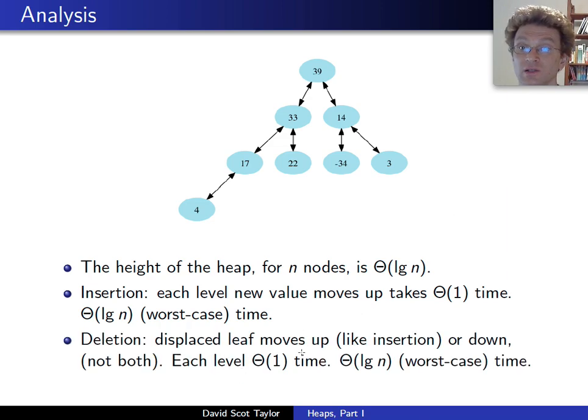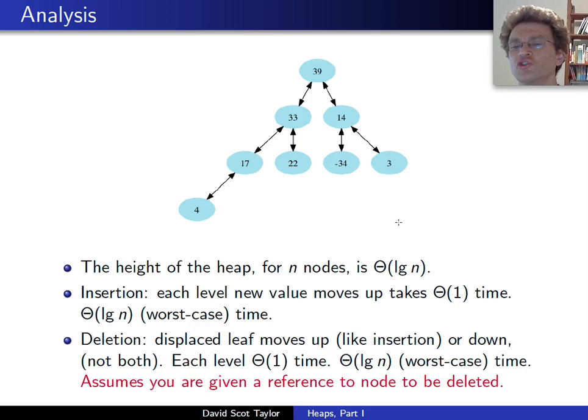To delete, you do this sort of swap, and then it either moves up or moves down. If it moves up, just like insertion, takes order log n at worst case. If it moves down, well, maybe you have to do two different comparisons to move down a level, but that's still a constant time, so logarithmic time for deletion. The only thing I've sort of swept under the carpet here is when you want to delete, we're assuming that you're given a reference to the node that you're going to delete. And I'll come back to that later, but that's it for part one. Thank you.